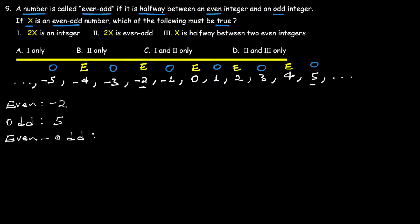Even-odd. To find the halfway point between two numbers, we calculate the midpoint. Between negative three and five: negative three plus five divided by two equals one. But wait — three and a half is between one and two. So the halfway point is 3/2 or 1.5, which is between integer one and integer two.